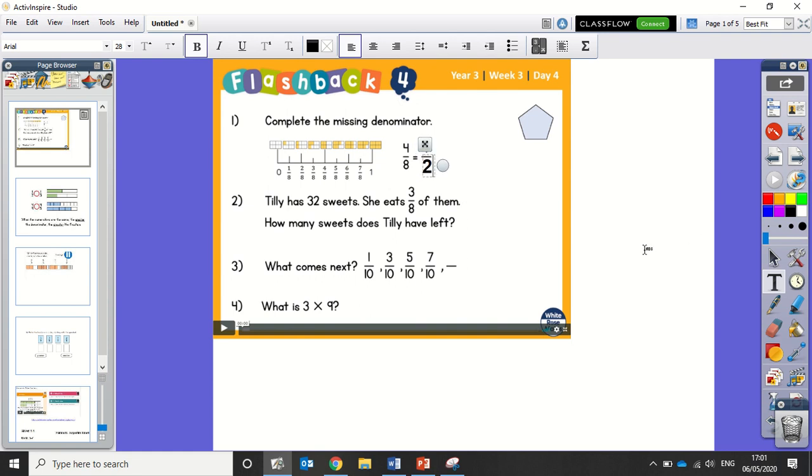Number 2, Tilly has 32 sweets, she eats 3 eighths of them. How many sweets does Tilly have left? Well first of all, let's do 32 divided by 8, which is 4. Times by 3 is 12, so she's eaten 12 sweets. So we need to do 32 take away 12, which equals 20. So the answer there is 20.